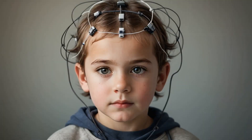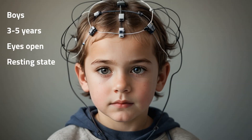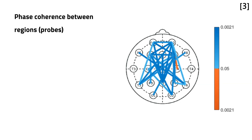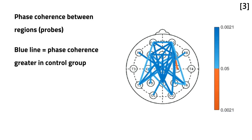Now that we've established the methods used in the group, let's look at our autism study using this approach. In this study we evaluate the EEG of boys between the ages of three and five years in the eyes-open resting state condition. There were 13 participants with ASD and nine in the control group. The EEG was recorded over 20 minutes and a three-minute segment was selected wherein the participants had minimal physical movement. We evaluated the phase coherence to find the connectivity strength between brain regions.